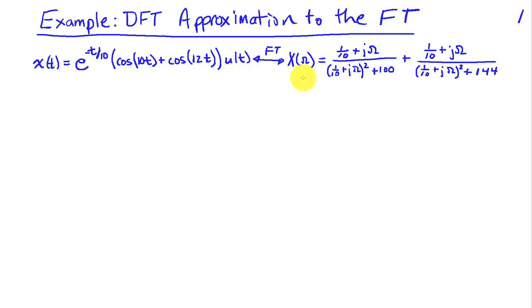You can take the Fourier transform of this signal, fairly straightforward using tables and properties, and we obtain that the Fourier transform is given by this expression here on the right side, and we can evaluate this in closed form at any sampling of omega, and therefore we'll have a benchmark or the truth from which to compare our DFT approximation.